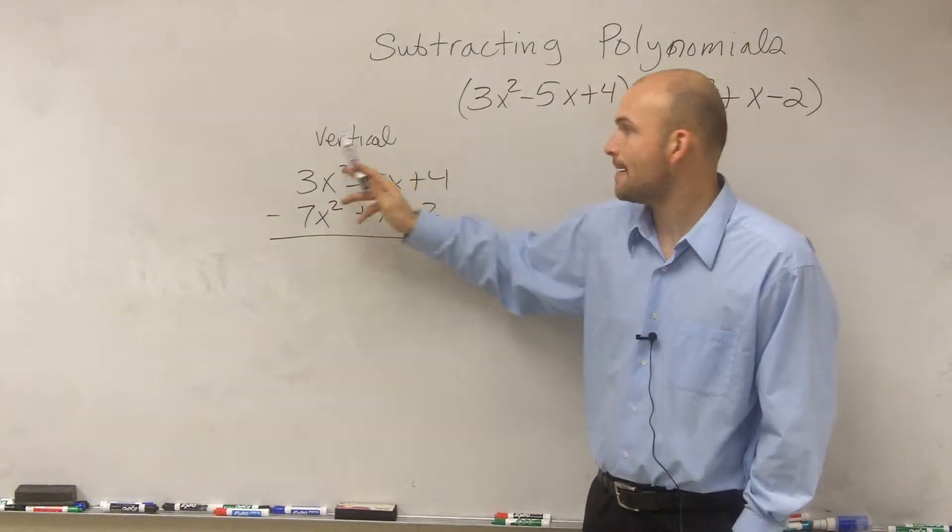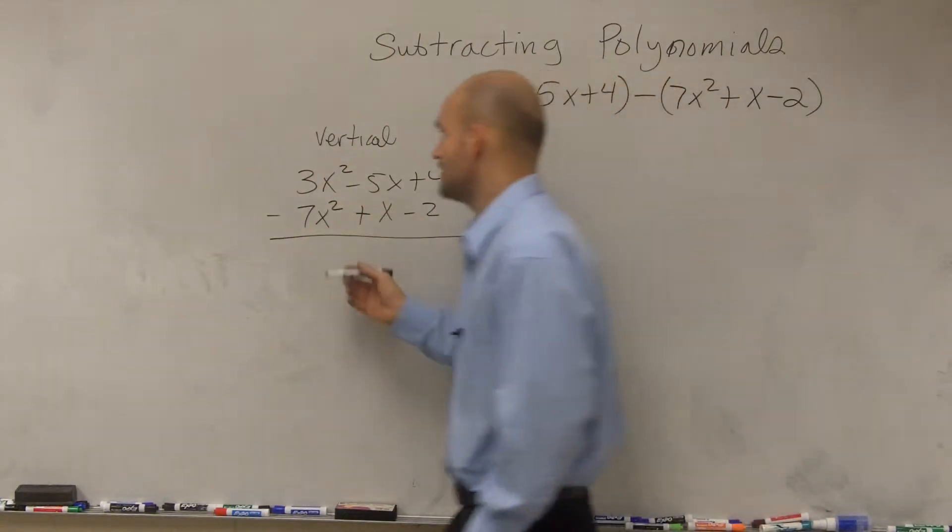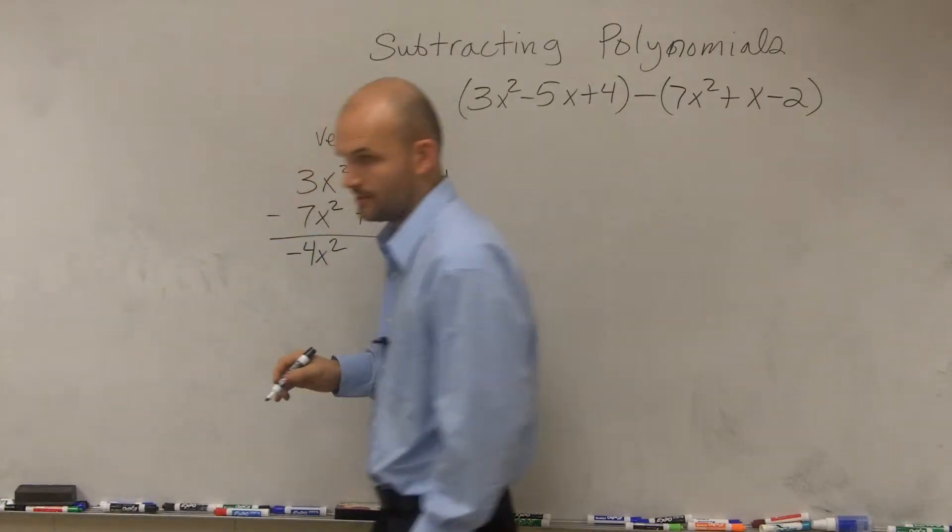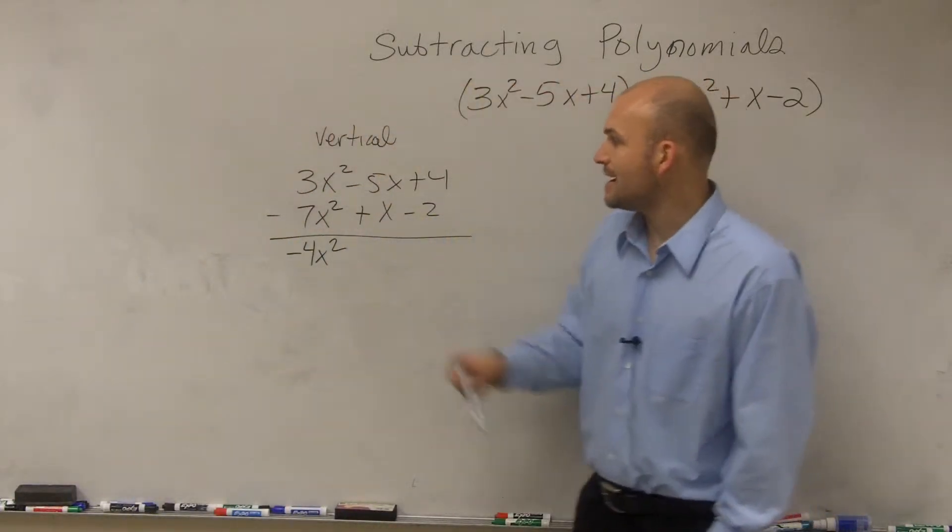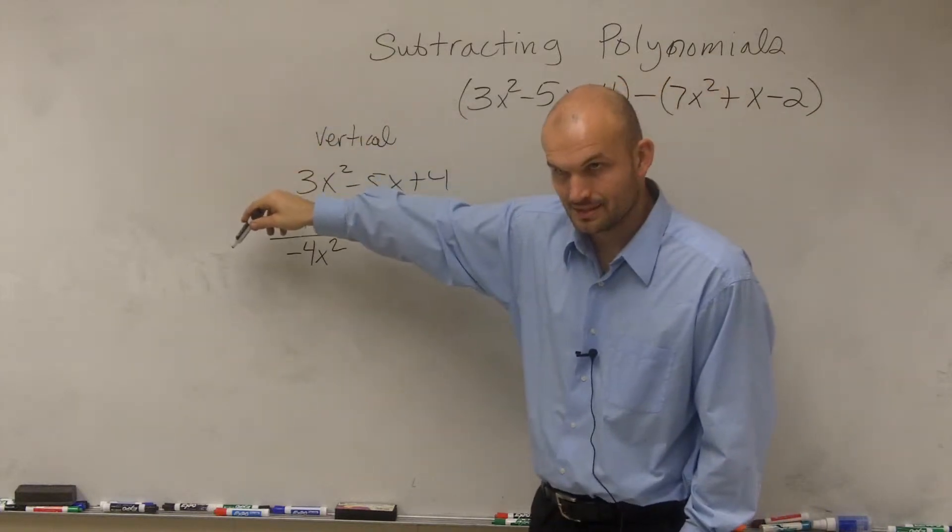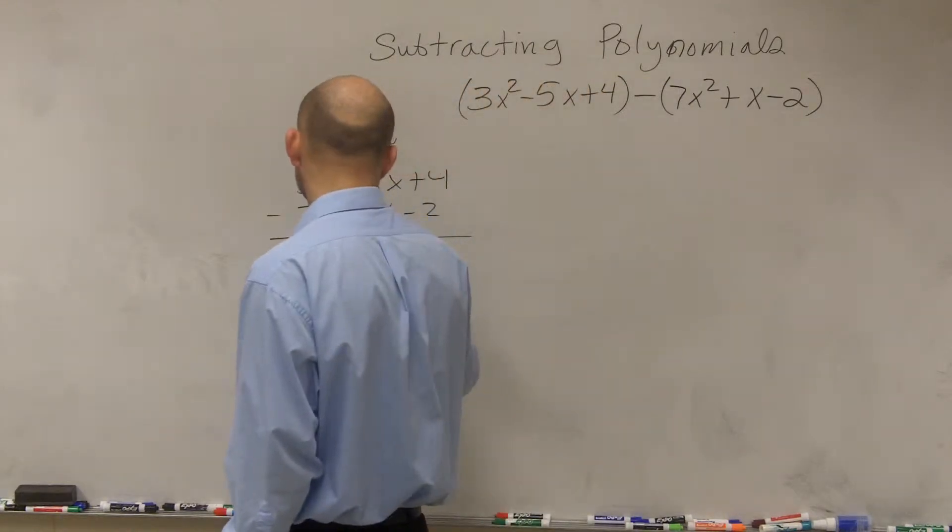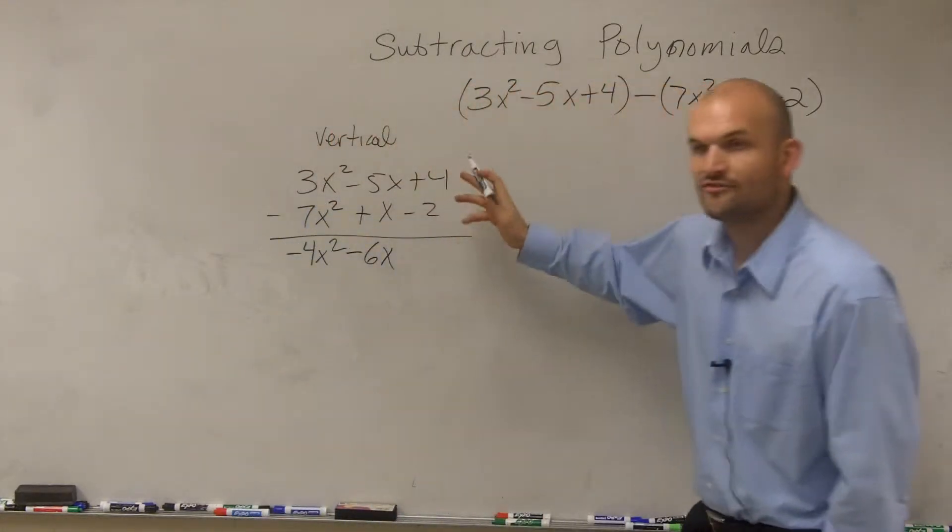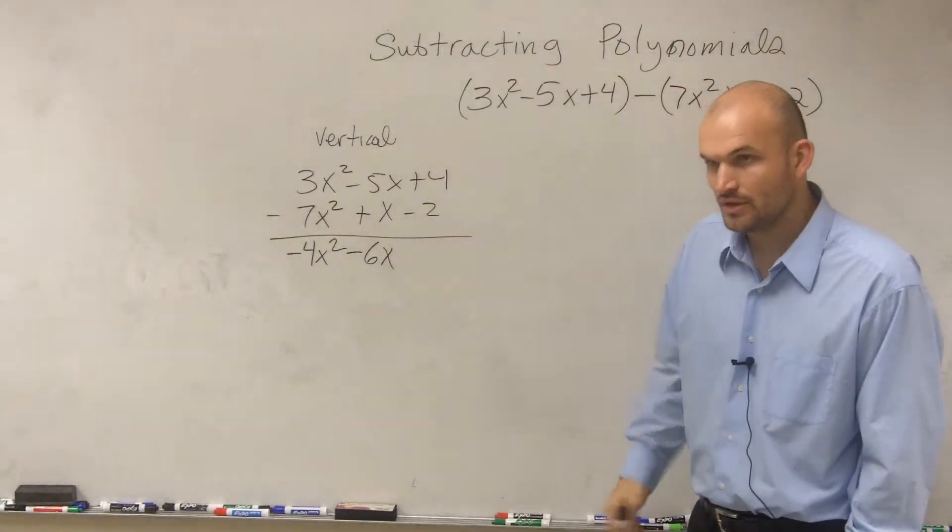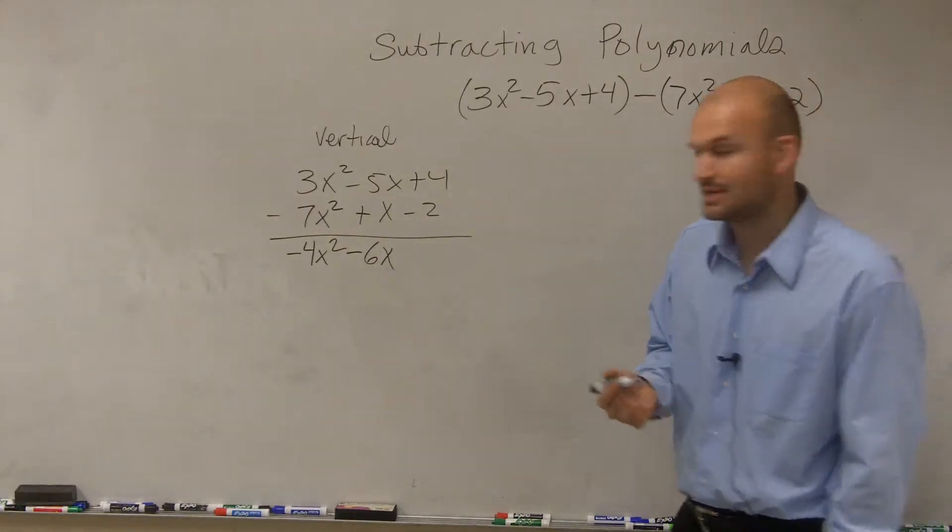3x squared minus 7x squared. That's going to be a negative 4x squared. Then you have negative 5x minus x, which is a negative 6x. And then 4 minus a negative 2, which is going to be a double negative. So therefore, we're going to add it. It's going to be a positive 6.